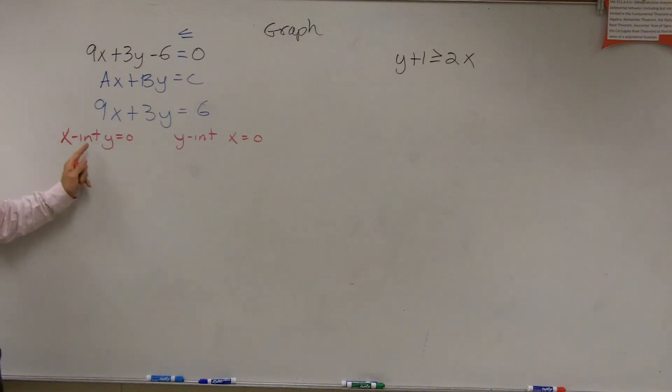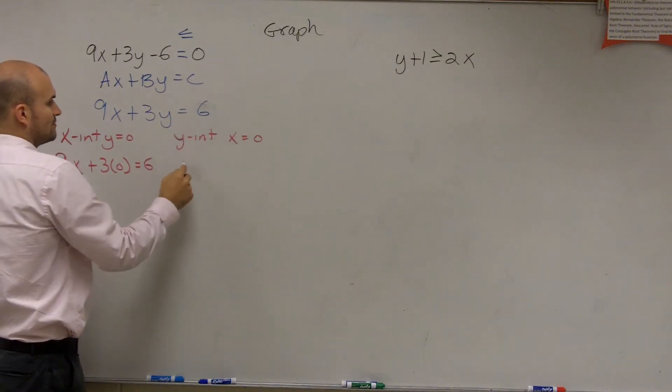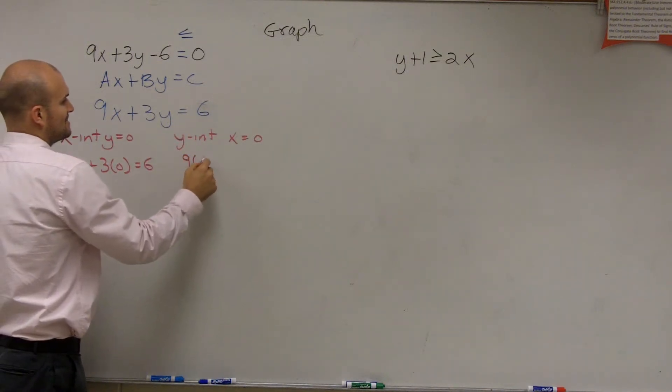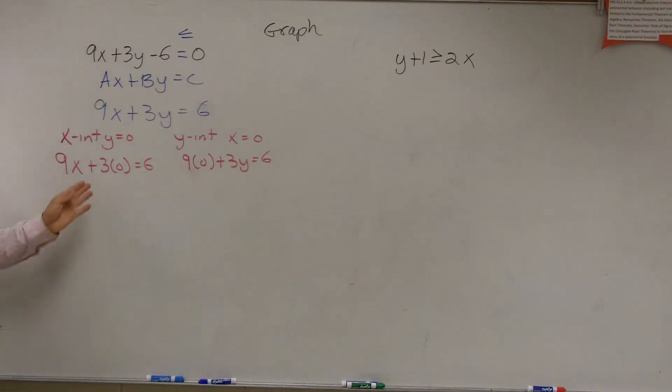So here, when the x, so x-intercept is when y equals 0. So you put 0 in for y. So I write 9 times x plus 3 times 0 equals 6. The y-intercept is when x equals 0. So I write 9 times 0 plus 3y equals 6. Yes?